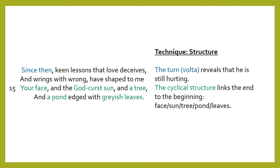Finally we are looking at structure. The turn, or volta, reveals that he is still hurting. The turn is a part of a poem where the answer is revealed or where it changes direction. The cyclical structure links the end of the poem to the beginning — the face, sun, tree, pond and leaves were all mentioned in the first stanza.